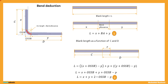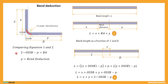Two equations have been derived: equation 1 gives blank length as a function of bend allowance, and equation 2 gives it as a function of OSSB and P (the overlap between the two leg lengths). Since L must be the same in both cases, comparing the two equations gives: BA = 2×OSSB − P. This overlap P is nothing but bend deduction (BD). Therefore, bend deduction BD = 2×OSSB − BA, or equivalently, BA = 2×OSSB − BD.